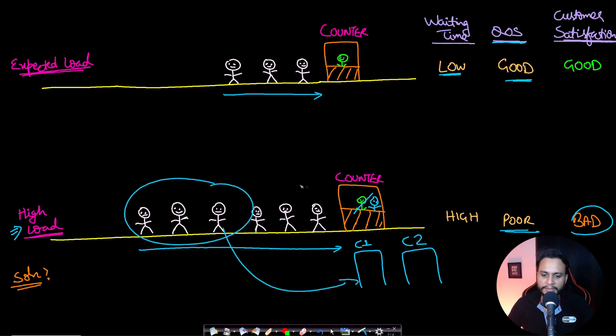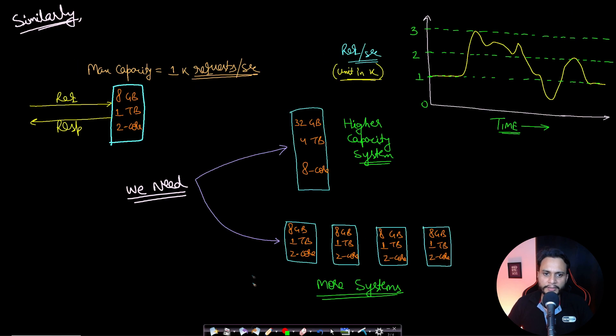Three people can move to counter 1 and the rest three people can move to counter 2, so parallely multiple people can be served. In this way we are actually increasing the capacity. So the quality of service will be maintained to be good. Similarly we can take an example of a computer system.